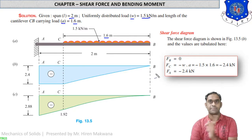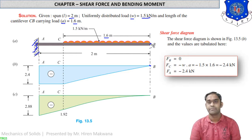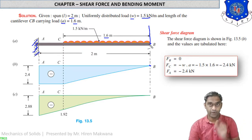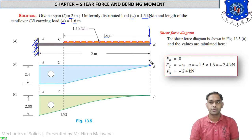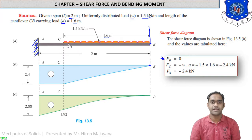Always start from the right side to the left side — from the free end to the fixed end. The free end is point B and the fixed end is point A. At point B there is no vertical load; the UDL starts after point B from B to C, but exactly at point B there is no load. So shear force at B equals zero. FB = 0.